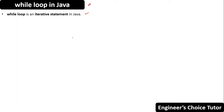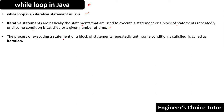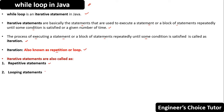The process of executing a statement or a block of statements repeatedly is called iteration, repetition, or loop. Iterative statements are used to execute a statement or block of statements repeatedly until some condition is satisfied or a given number of times. Iterative statements are also called repetitive statements or looping statements.